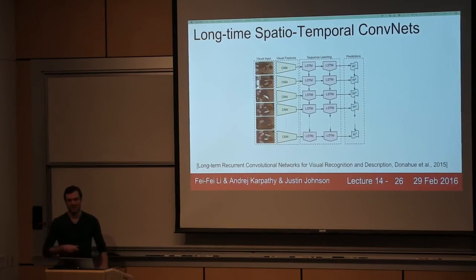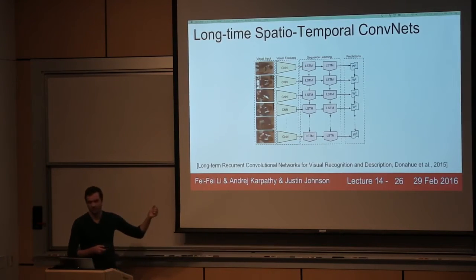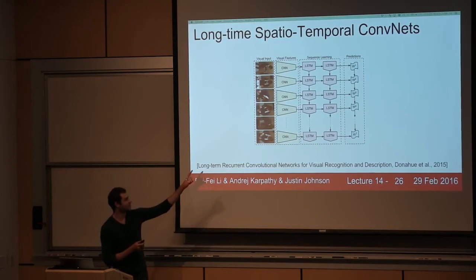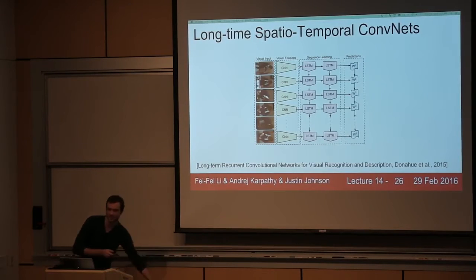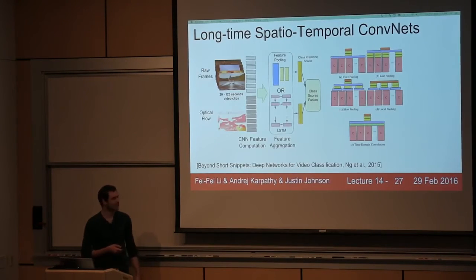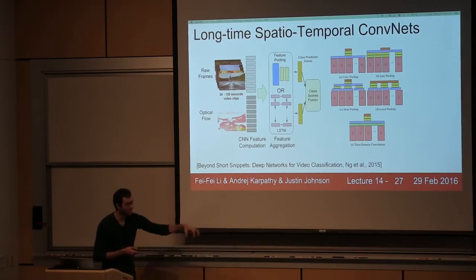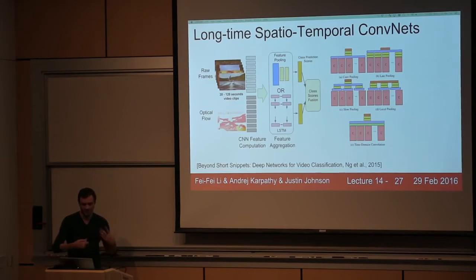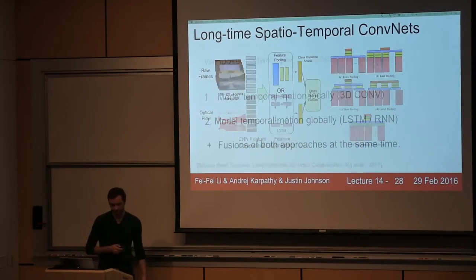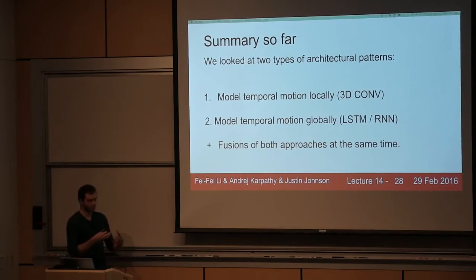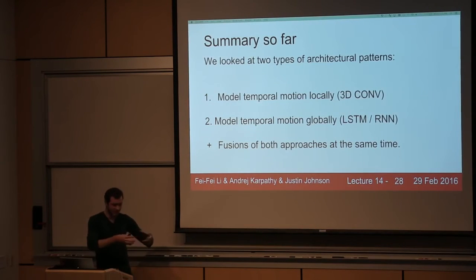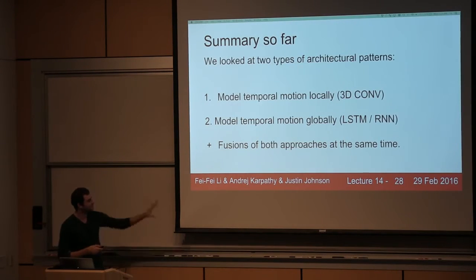Since then, several more recent papers take this similar approach. In 2015, Jeff Donahue et al. from Berkeley had ConvNets looking at individual frames with LSTMs stringing results together temporally. A similar idea from Google used optical flow and images both processed by ConvNets, then an LSTM merges them over time. This combination of local and global modeling covers two architectural patterns: local motion via 3D conv or optical flow, and global motion via LSTMs stringing together sequences of many time steps, or fusions of both.